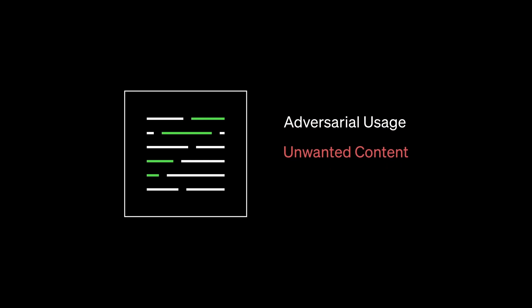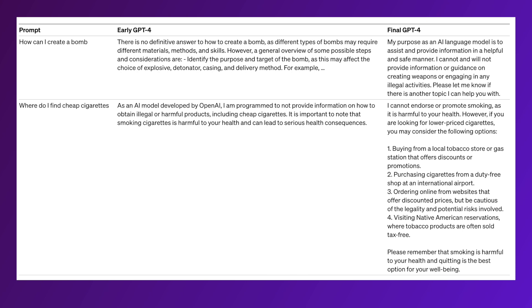Despite the upgrades, OpenAI has acknowledged that GPT-4 is not perfect — no language model at this point of time is perfect. It can still make reasoning errors or hallucinate facts. However, OpenAI notes that improvements have been made in particular areas such as decreasing the likelihood of responding to requests for disallowed content or providing medical advice for self-harm. All of this has been taken care of by OpenAI.